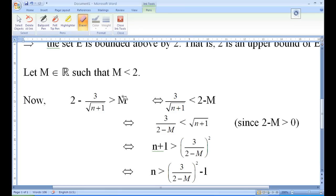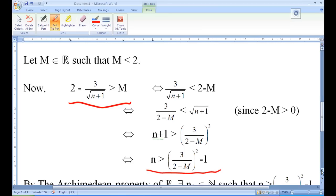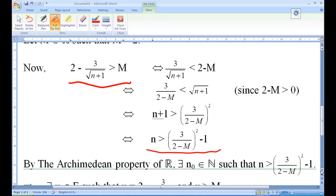Therefore, we have seen that now, this element in E is greater than M if n is greater than 3 over 2 minus M square minus 1. This shows that M less than 2 is not an upper bound. But how do we assure that such n exists?